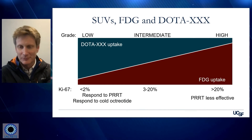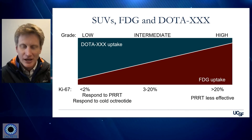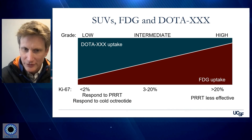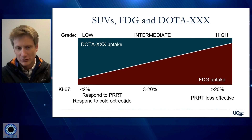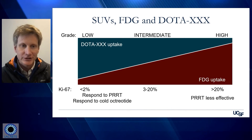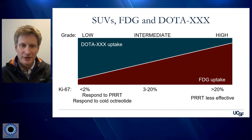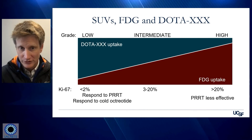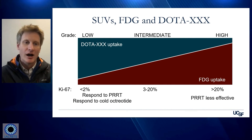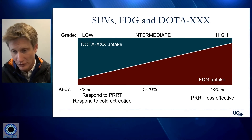Another comment about FDG PET — and I put here DOTA-XXX, which would be DOTATOC, DOTATATE, the different somatostatin receptor PET agents. In general, not always true in an individual patient, but patients who have higher grade tumor, higher KI-67s over 20, will have higher FDG uptake and lower somatostatin receptor PET uptake. So the higher your somatostatin receptor PET uptake, the better behaved the tumor normally is, the slower progressing, and the more likely it is to respond to cold octreotide. The ones with lower uptake and higher FDG uptake are going to be slightly more aggressive.